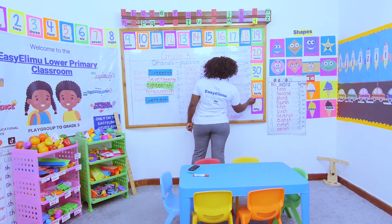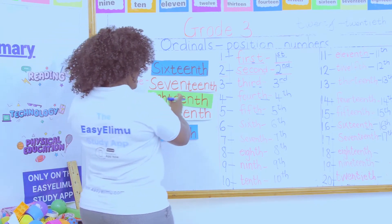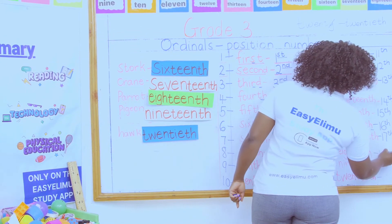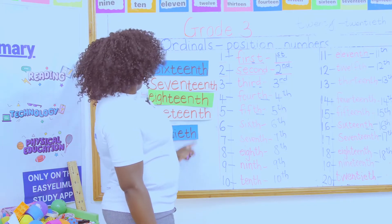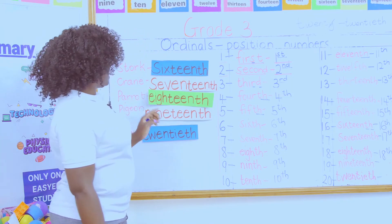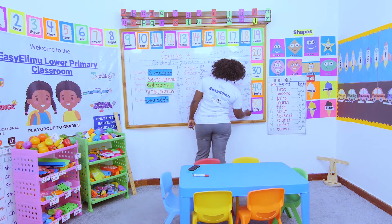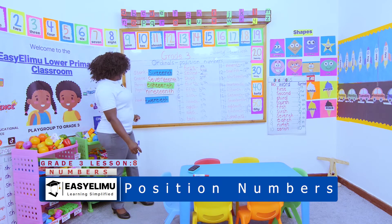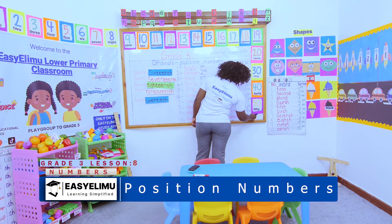What about the parrot? We are saying the parrot was in the 18th position. The word 'eighteenth' is too long, so you write the number 18 and add a TH to form 18th. Then, what about the pigeon? The pigeon was in the 19th position. The word 'nineteenth' is too long, so you write the number 19 and add a TH. And lastly, we are on number 20. The hawk was in the 20th position. You write the number 20 and then add a TH.